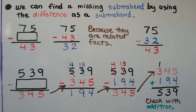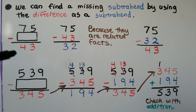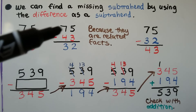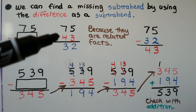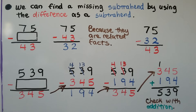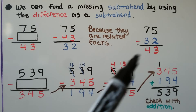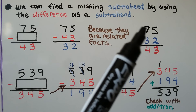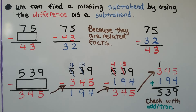We can find a missing subtrahend by using the difference as a subtrahend. We have 75 minus some number has a difference of 43. We can put the 43 as the subtrahend and do our subtraction. 5 minus 3 is 2. 7 tens minus 4 tens is 3 tens. We get 32. That must be the missing subtrahend because of related facts. So 75 minus 32 is equal to 43. We can check our work: 5 minus 2 is 3, 7 minus 3 is 4. Yes, it's 43.